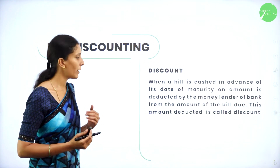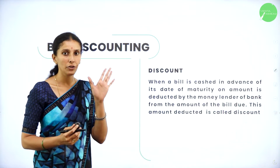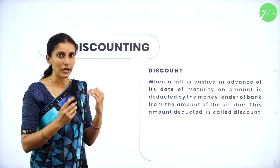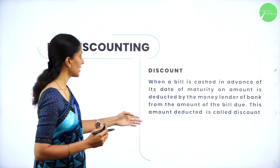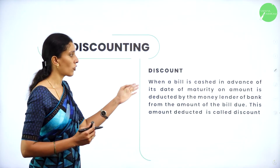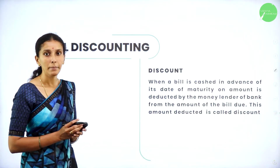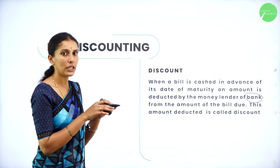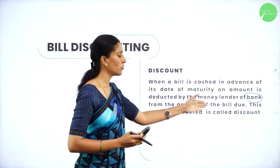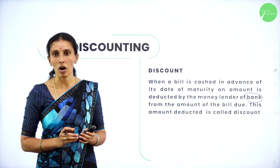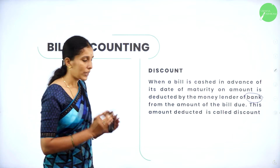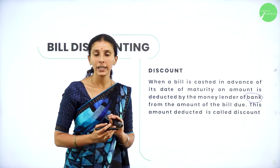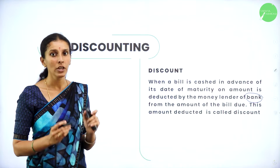Next is discount. What do you mean by discount? When a bill is cashed in advance — your period is three months but you're paying after one month — your amount will get a certain value of discount. That is, when a bill is cashed in advance of its date of maturity, an amount is deducted by the money lender or bank. The bank acts as a mediator between the seller and the buyer. The amount deducted from the bill due is called discount. Whenever you pay the money before the maturity date, that value of amount is your discount.